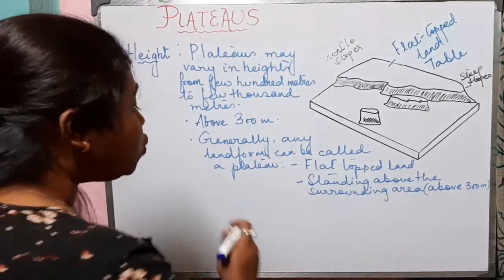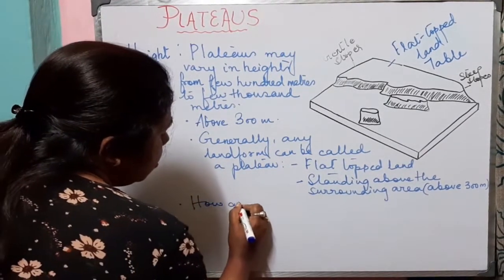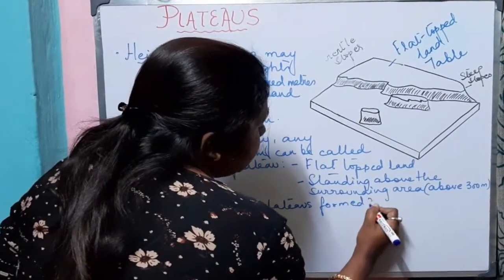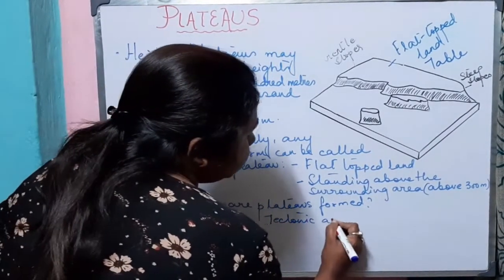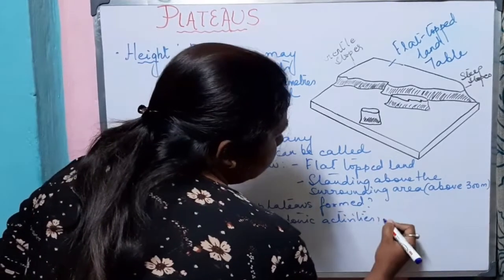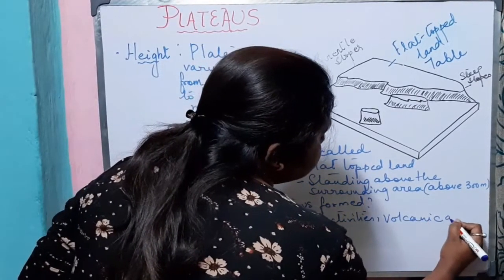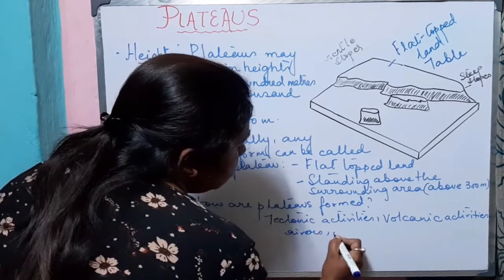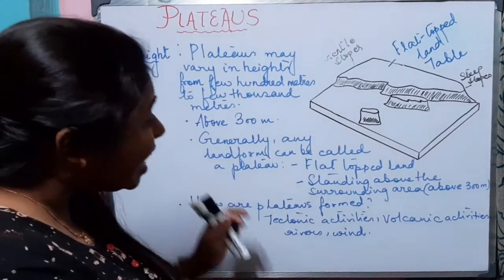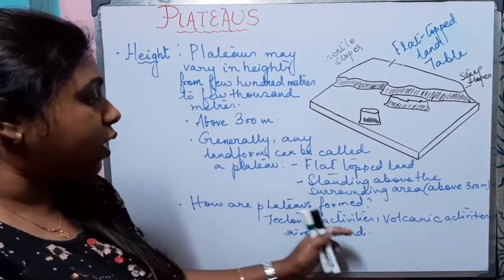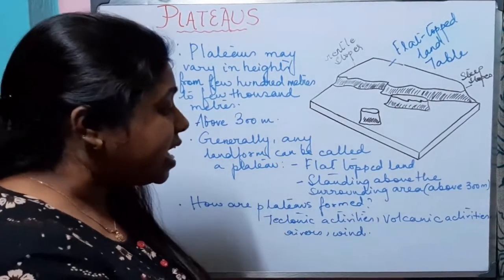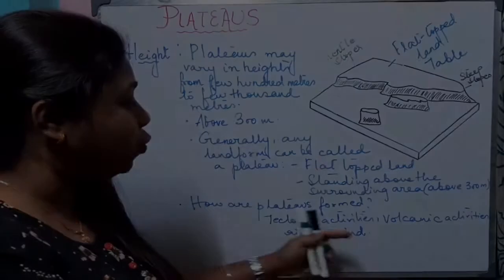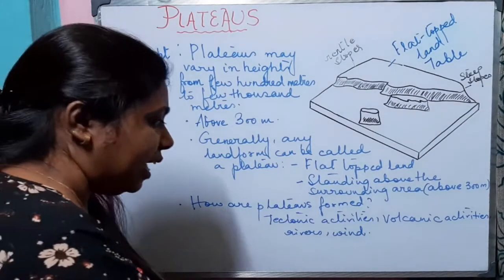Now we should also know how plateaus are formed. Plateaus are formed by tectonic activities, by volcanic activities, and by rivers and wind. Due to tectonic activity — that means the movement of plates — due to volcanic activity, meaning the eruption of a volcano, or due to the action of rivers and wind, plateaus can be formed.